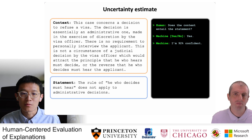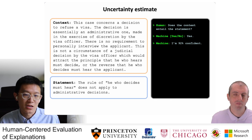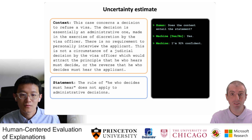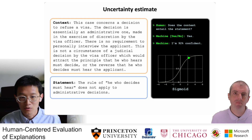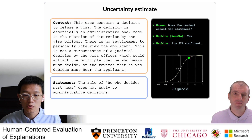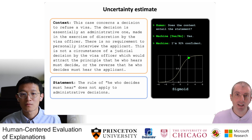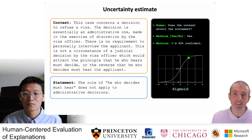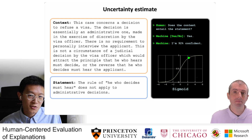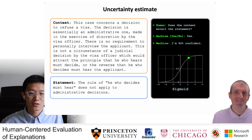This is called an uncertainty estimate. A typical uncertainty estimate is just a number. For example, the model might say it's 92% confident. That sounds useful — where does this number come from? Well, for models trained with maximum likelihood, which is most supervised learning models, the final output is a distribution over all possible labels. This is the probability of y given x — the probability of the label given the input — and this is a number between 0 and 1. Higher means that it's more confident in the answer.